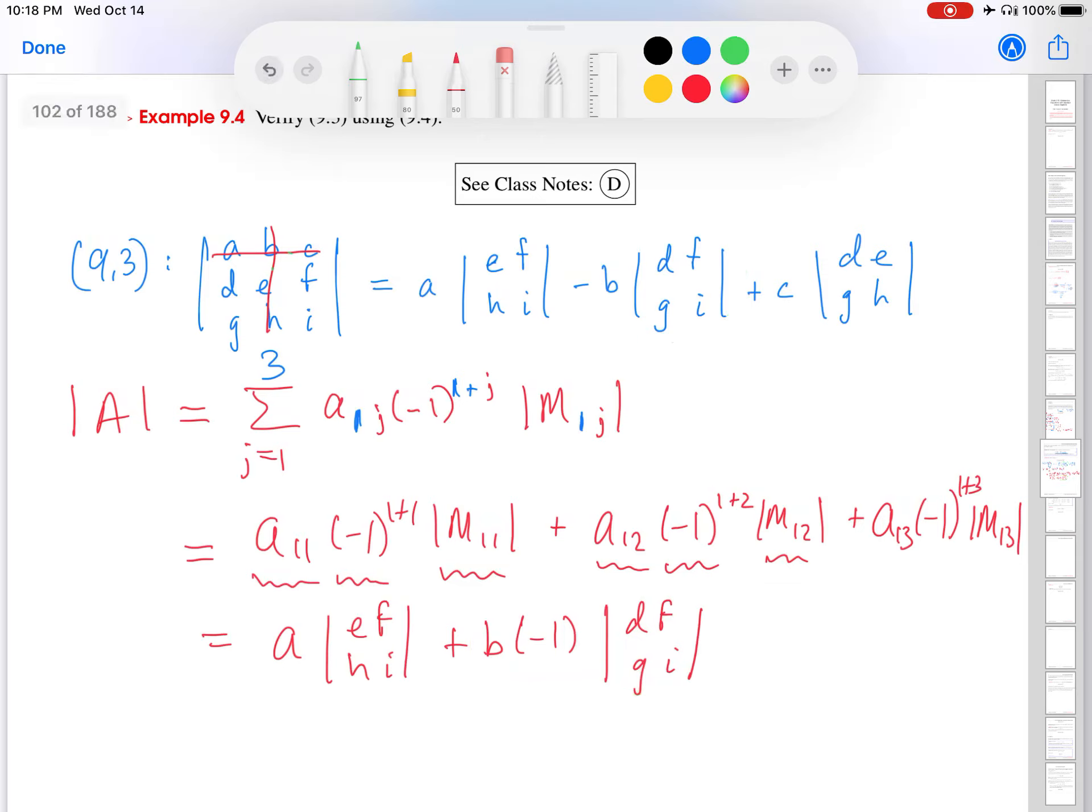And then the last bit here is plus A1,3. So A1,3, first row, third column. That's C up here. So plus C minus 1 to the fourth. So that's just 1. Determinant of M1,3. So I'm going to go up to the matrix, cross out the first row and the third column. And I'm left with D, E, G, H. And then we compare this last term. And indeed, this is C times that determinant. So we have derived this formula using the definition above for the determinant.